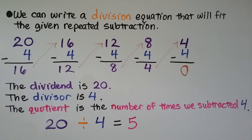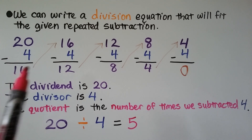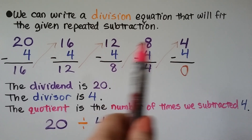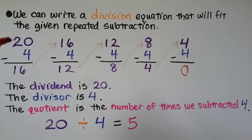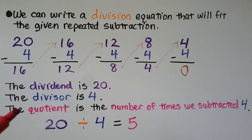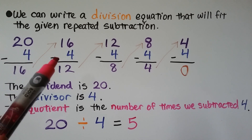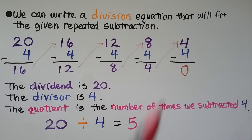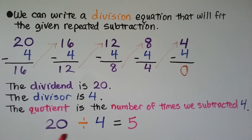We can write a division equation that fits a given repeated subtraction. Looking at this example, the starting number tells us the dividend is 20. The divisor is 4 — that's how much is being subtracted each time. The quotient is the number of times we subtracted 4: 1, 2, 3, 4, 5 times. So 20 divided by 4 is equal to 5.